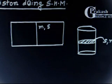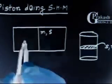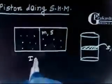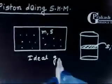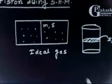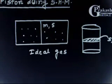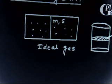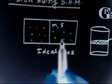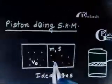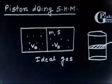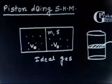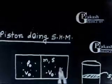This cylinder contains ideal gas — RDL gas — on both sides, so we can apply the equation PV = nRT if needed. The gas is enclosed from both sides. In equilibrium, the piston divides the cylinder into two equal parts. The volume of each side is V0, and the gas pressure on both sides is also P0.